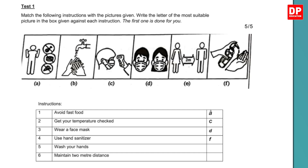5. Wash your hands — that's B. 6. Maintain 2 meter distance — that's E. That was very straightforward, wasn't it?